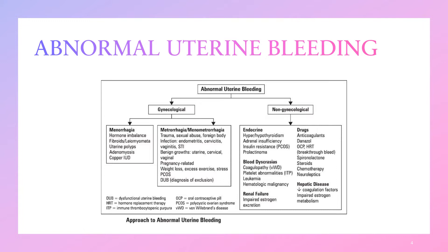A second category under the gynecological causes is metrorrhagia or menorrhagia. Causes of this include trauma, sexual abuse, benign growths such as uterine, cervical, and vaginal. It could also be pregnancy-related. Weight loss, excessive exercise, and stress also come under this category.